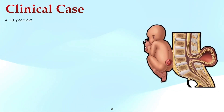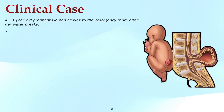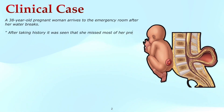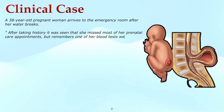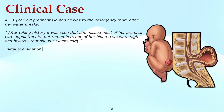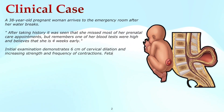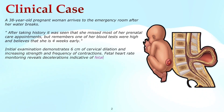A 38-year-old pregnant woman arrives to the ER after her water breaks. After taking her history, it was found that she missed most of her prenatal care appointments but remembered that one of her blood tests was high, and believed that she was 4 weeks early. Initial examination demonstrates 6 cm of cervical dilation and increasing strength and frequency of contractions. Fetal heart rate monitoring reveals deceleration indicative of fetal distress, prompting delivery via cesarean section.